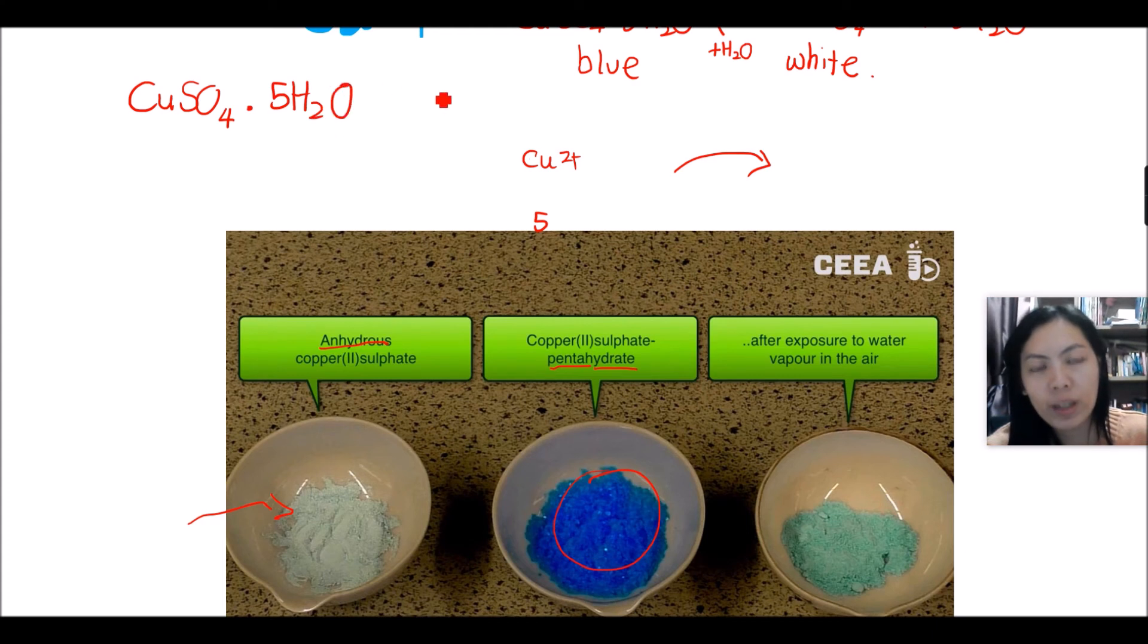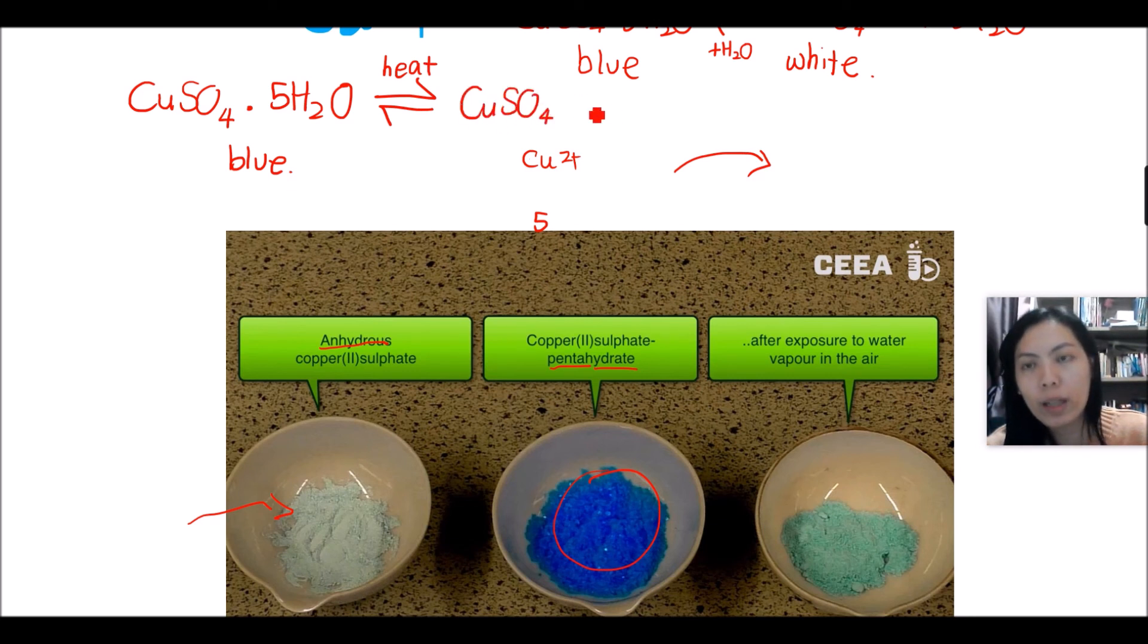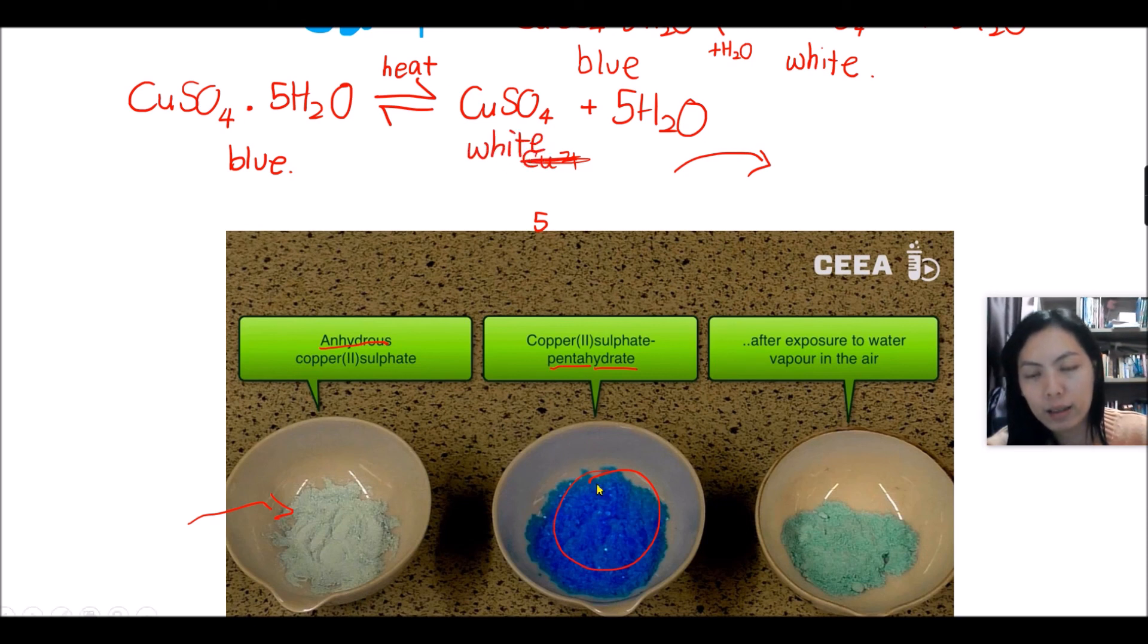When we heat them, meaning we remove the water, it will be copper sulfate and five water molecules, making them white in color. After exposure to the water vapor a little bit, it will make them slightly blue.